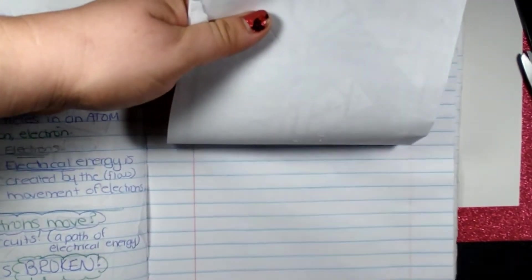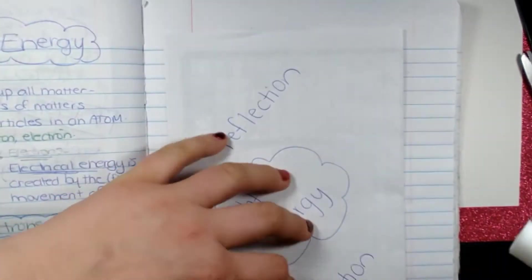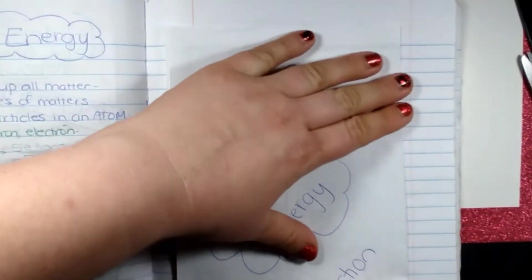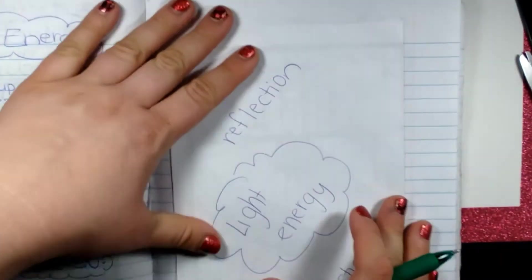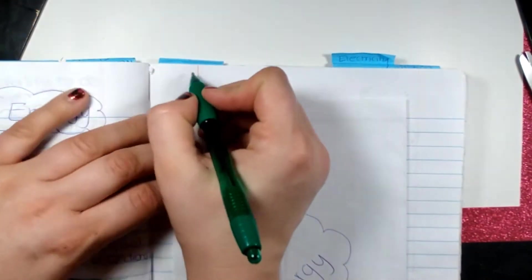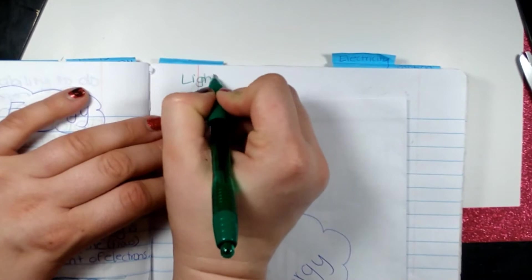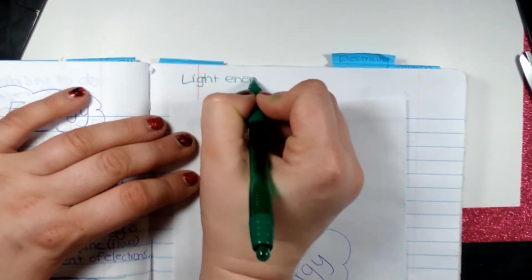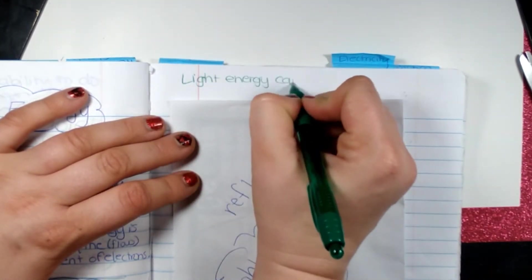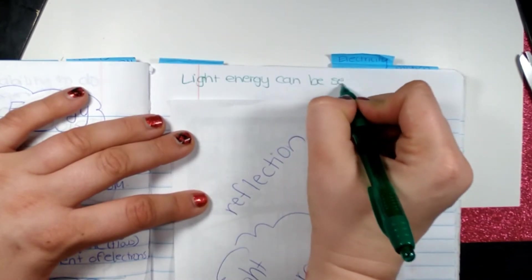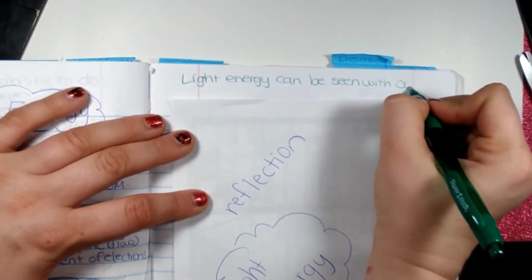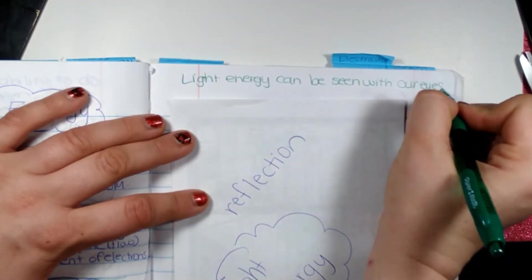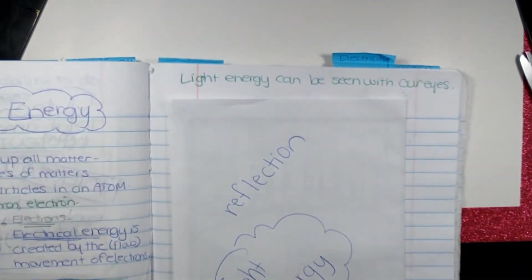Now, light energy is energy that can be seen by our eyes. I'm going to put up here light energy can be seen with our eyes, and in our notes before, it travels through space.